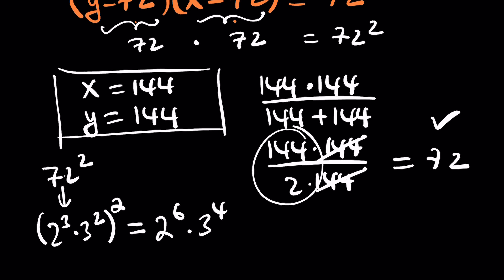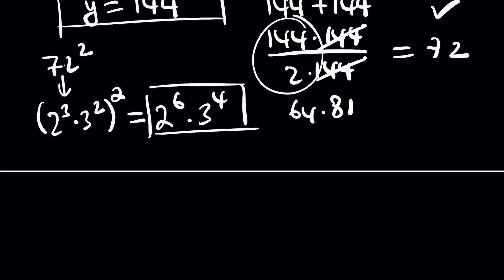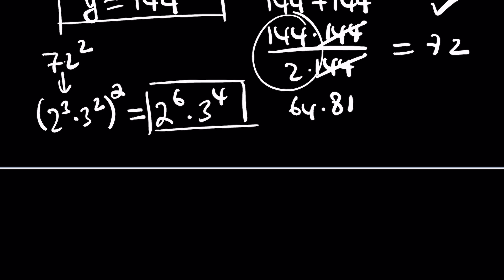In other words, 72 squared is the same thing as 64 times 81. So here's what we're going to look at. How do you find the factors of a number or the number of factors of a number? Well, look at the exponents. 2 to the sixth from 2 to the power of zero through 2 to the sixth.